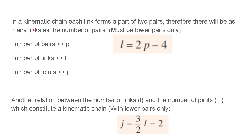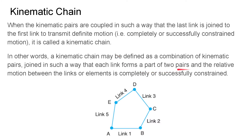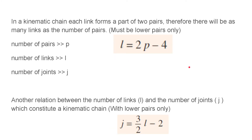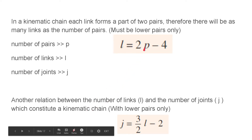There are two definitions for a kinematic chain. In a kinematic chain each link forms a part of two pairs, so there are relations between number of pairs and number of links, and between number of pairs and number of joints. These pairs must be lower pairs only — no point contact. The first relation gives the relationship between number of links and number of pairs.